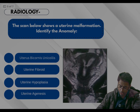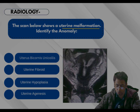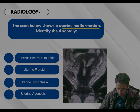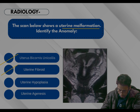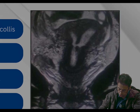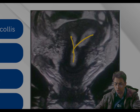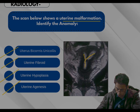A question from radiology: the scan below shows a uterine malformation — it is mentioned in itself that there is a problem in the uterus. The options given are uterus bicornis unicollis, uterine fibroid, uterine hyperplasia, and uterine agenesis. Enlarging the figure, this is the area of the uterus — so there is no question of uterine agenesis, since you can clearly demarcate the uterus. Option D is eliminated.